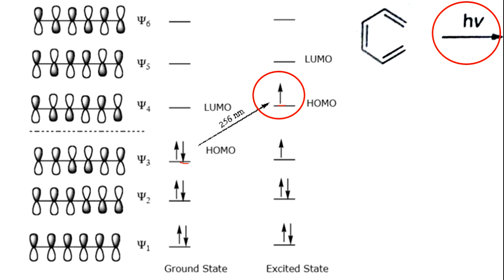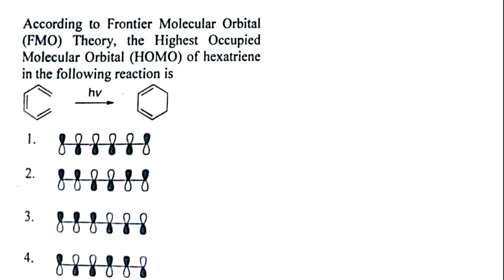So here in the question it is asked. They have asked that for the hν, that is for photoreaction, so there should be an excitation from the ψ3 to ψ4. So the HOMO will also be shifted to ψ4.